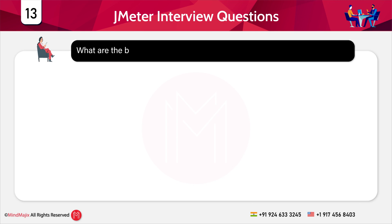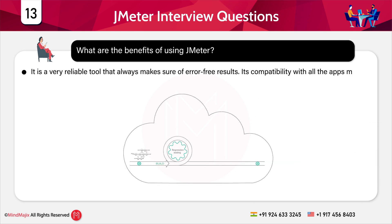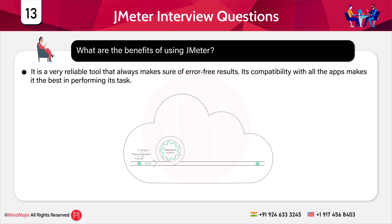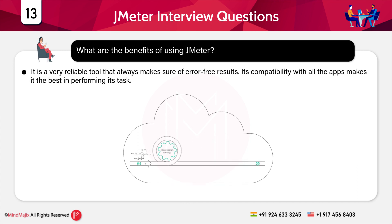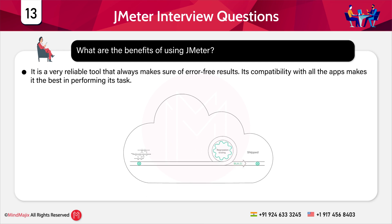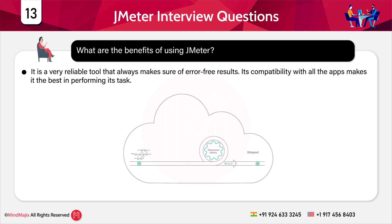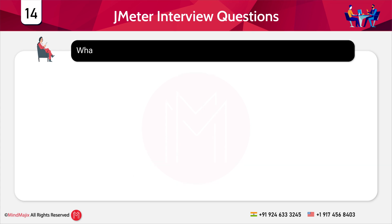The next question is: what are the benefits of using JMeter? It is a very reliable tool that always ensures error-free results. Its compatibility with applications makes it best for performance testing. JMeter is an open-source tool, so users need not worry about cost. Learning and using this tool is not a big deal, and customization of JMeter to fit exact needs is not difficult. There are several tutorials and online communities to help eliminate any problems during the process.